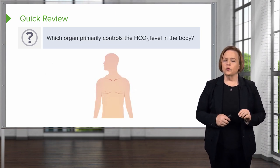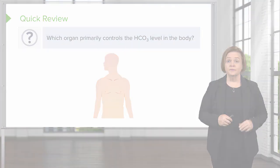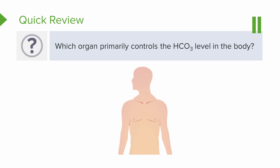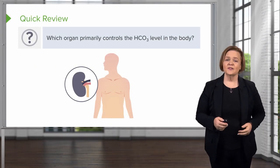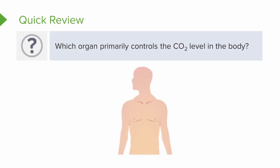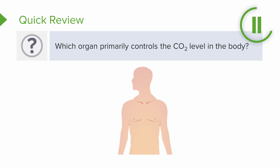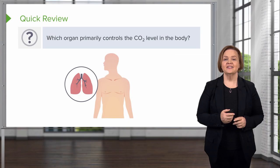Which organ primarily controls the bicarb level in the body? HCO3 is just shorthand for bicarb. Which organ primarily controls bicarb? The kidneys. Which organ primarily controls CO2 or carbon dioxide level in the body? The lungs.